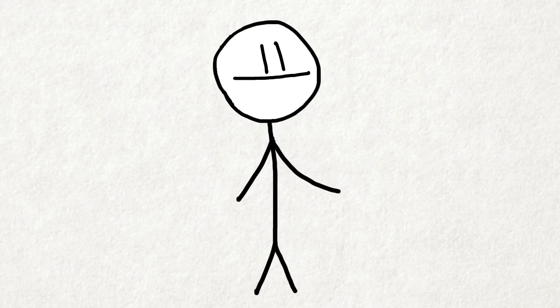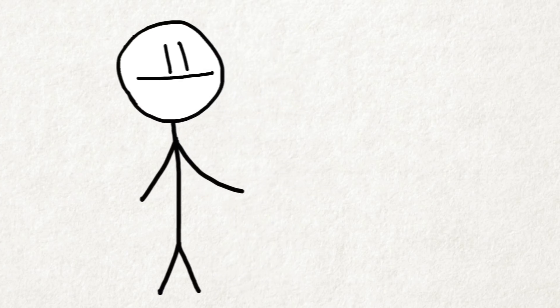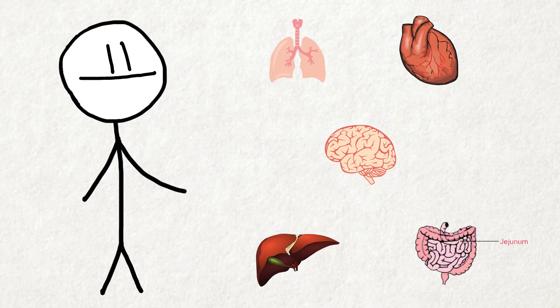In a worst-case scenario sort of speculation, it's thought that the absolute minimum organ content a human body could endure would be the brain, part of the lungs with airways and blood vessels, the heart, the liver, a meter or so of the small intestine called the jejunum, part of a kidney, bone marrow, and at least part of the chest skeleton and the diaphragm.